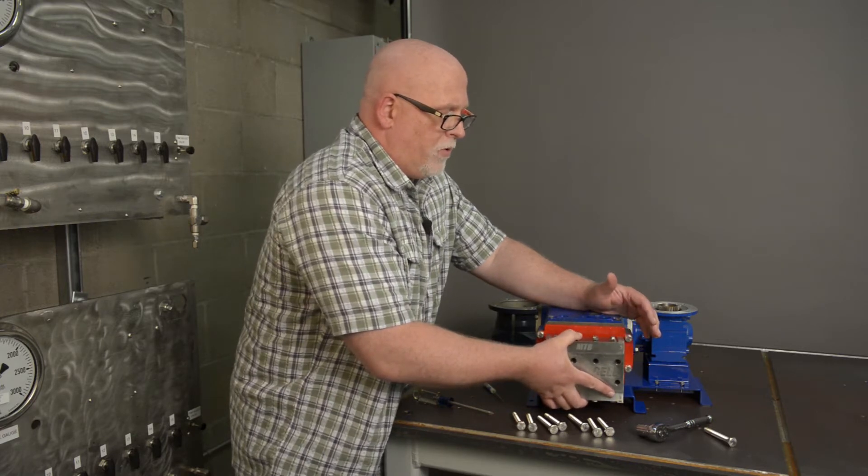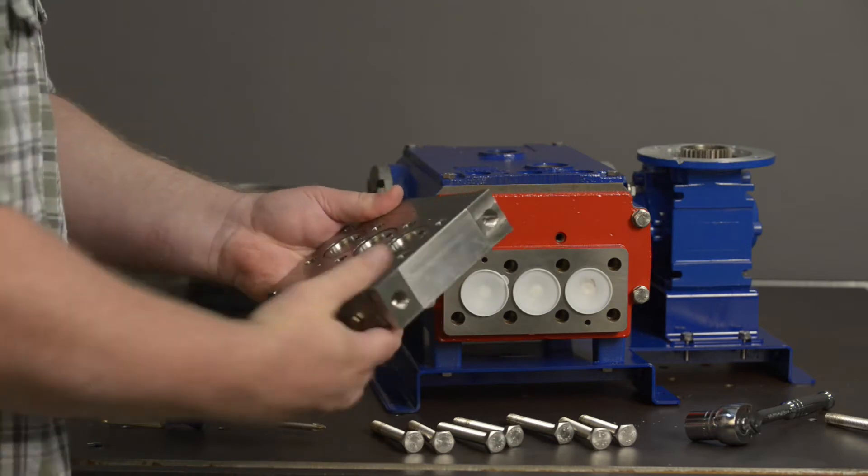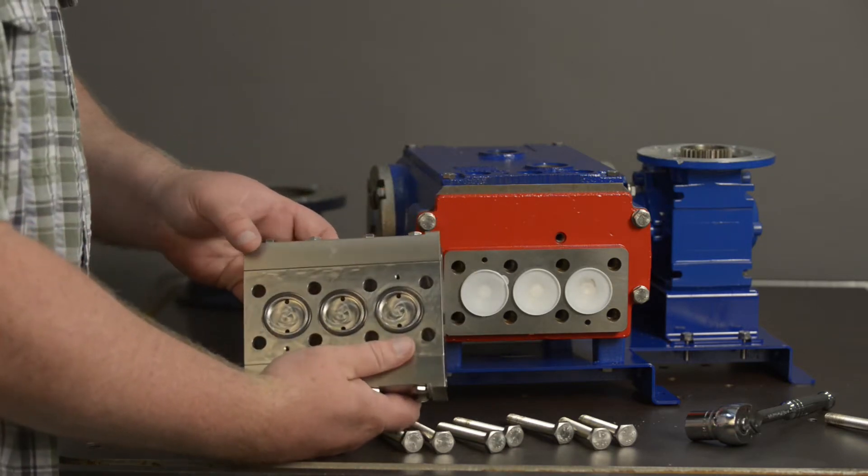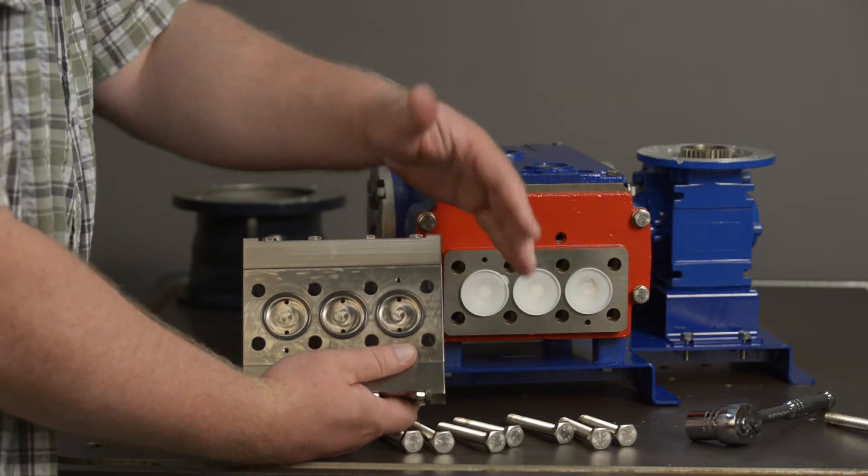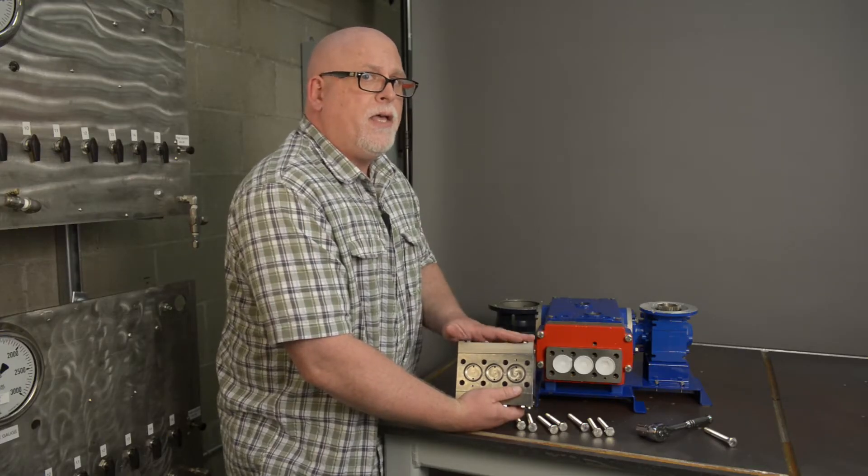When you remove the manifold, it comes out in one piece. As you can see, there's no need to take off the top or the bottom portion of the manifold to get at the diaphragms. That can all stay together.